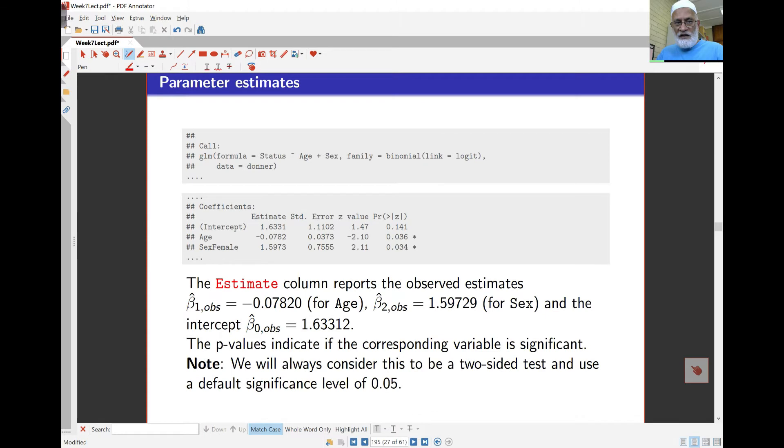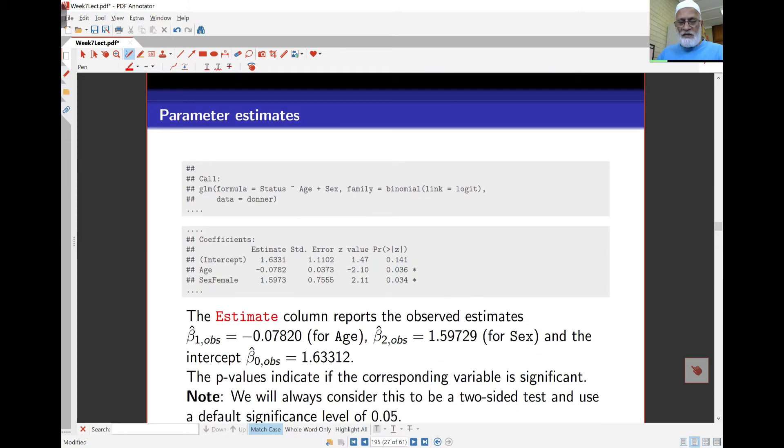As far as parameter estimates go, my beta naught, the intercept is 1.6331. My beta 1 for age is negative 0.0782, and for females is 1.5973.